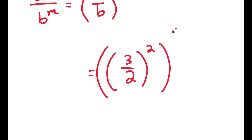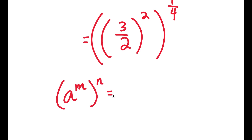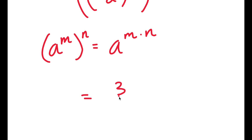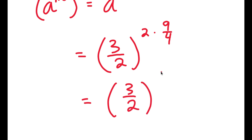And now I have this to the power of 9 over 4. If I have something in the form a to the power of m to the power of n, this is equal to a to the power of m times n. So 3 over 2 to the power of 2, to the power of 9 over 4, is the same thing as 3 over 2 to the power of 18 over 4. And 18 over 4 simplifies to 9 over 2, so I have 3 over 2 to the power of 9 over 2.